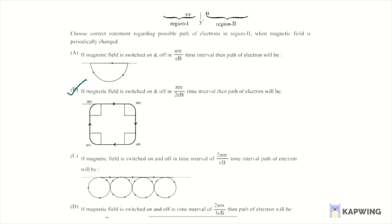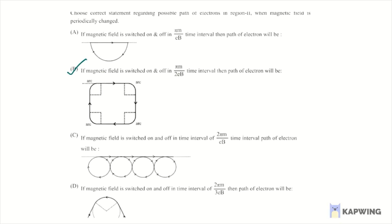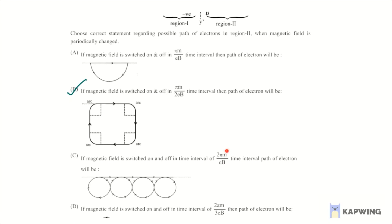We can check for C and D also. C says if the magnetic field is switched on and off in this time interval of 2π m by EB, the time interval. Path of the electron we have to calculate. This means after completing one circle, magnetic field is switched off for same time and then again switched on. So one circle is completed, but in this time if it travels distance 2R, then only these circles are touching possible.